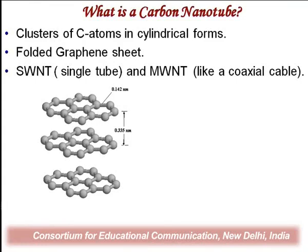Buckminster fullerene C60 is used at both ends of closed carbon nanotubes to cap them. The third family is carbon nanotubes — the third allotrope of carbon — formed by carbon clusters. To prepare carbon nanotubes we use a graphene sheet, which is two-dimensional. The carbon molecules are arranged in the form of a sheet, which is then rolled to form a tube — that is a carbon nanotube.